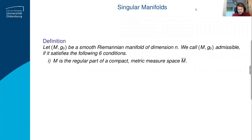So what I mean is I have a smooth Riemannian manifold of dimension N, but I do not assume it's compact. And I call it admissible if it has six conditions — bear with me, some of these are more important than others. Point one is: this smooth space is the regular part of a compact metric measure space.